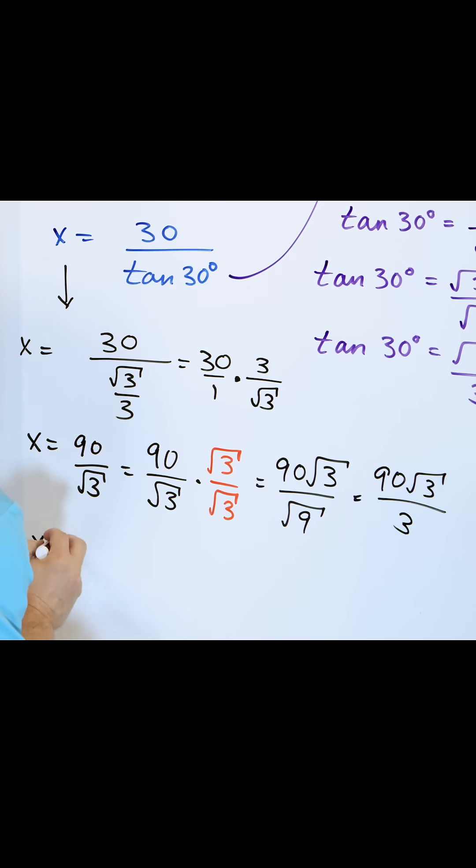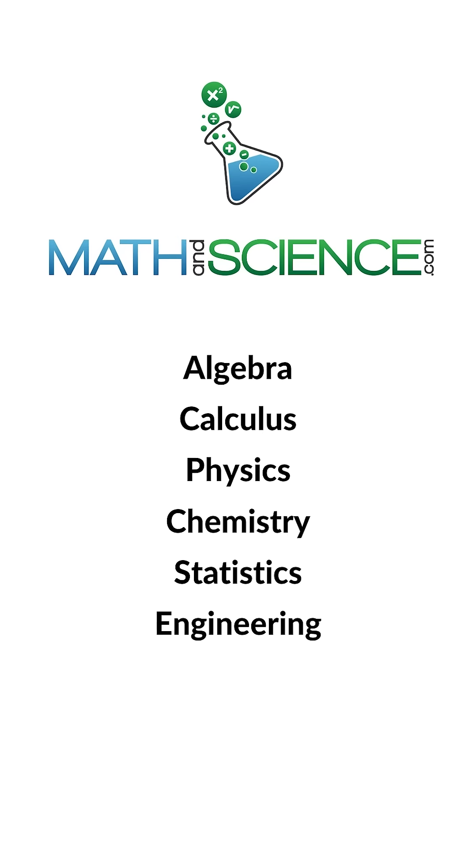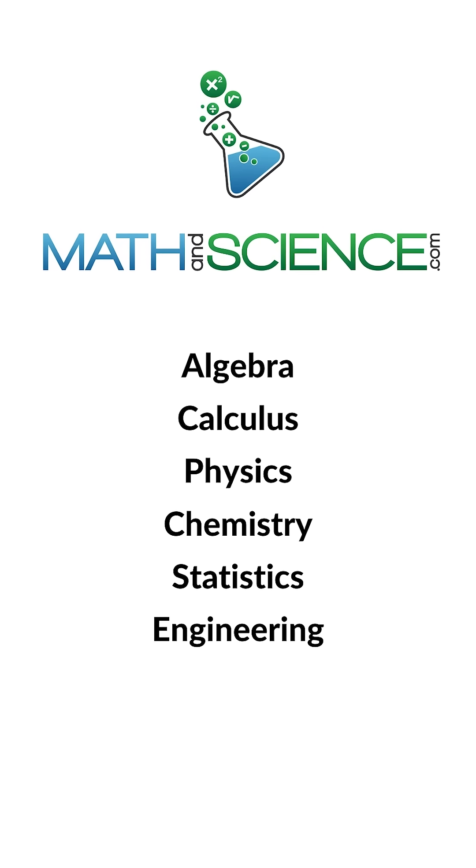And so we can divide that out and we will get x is equal to 30 times the square root of three. Learn anything at mathandscience.com.